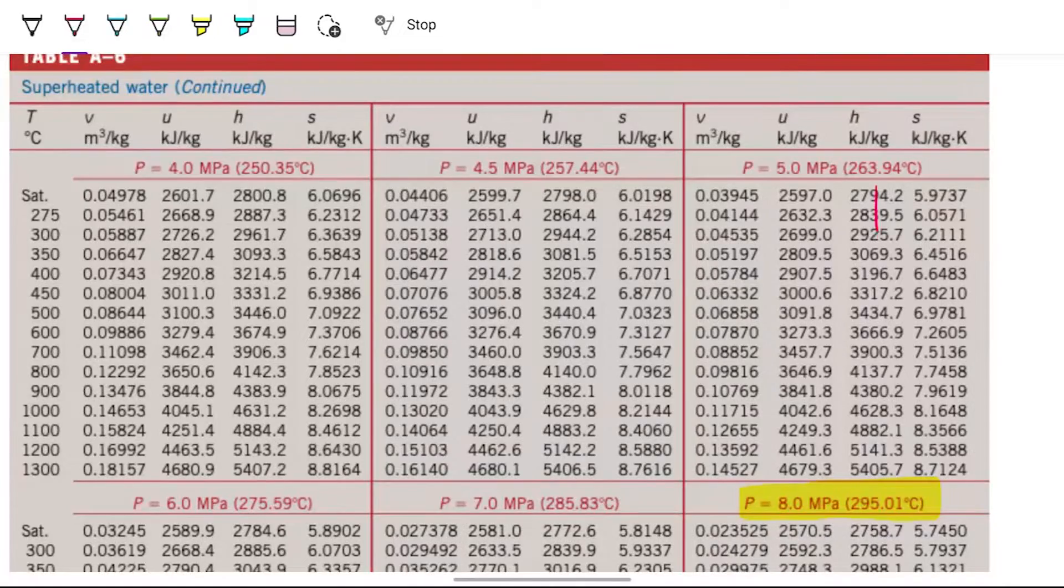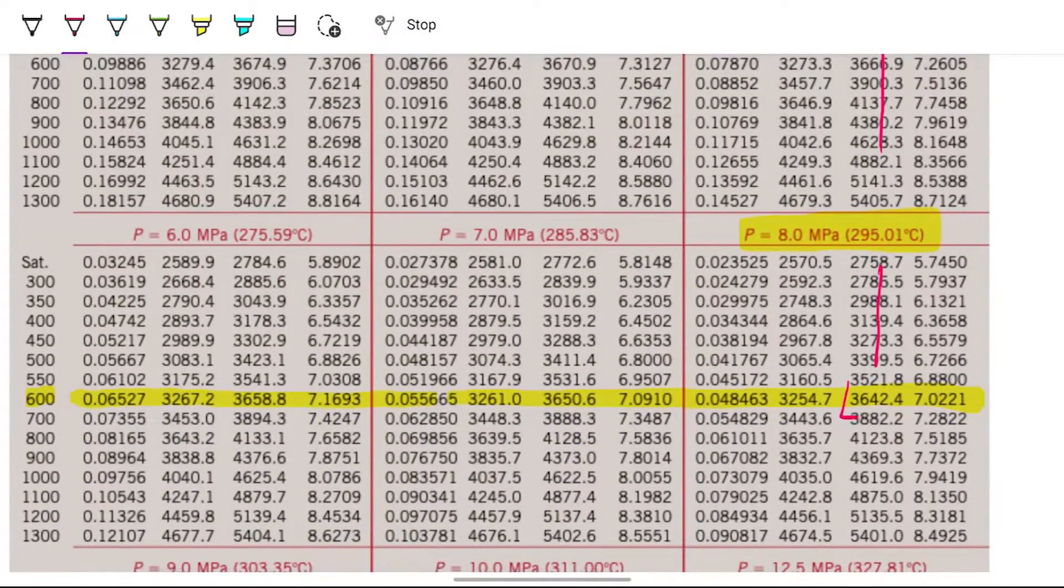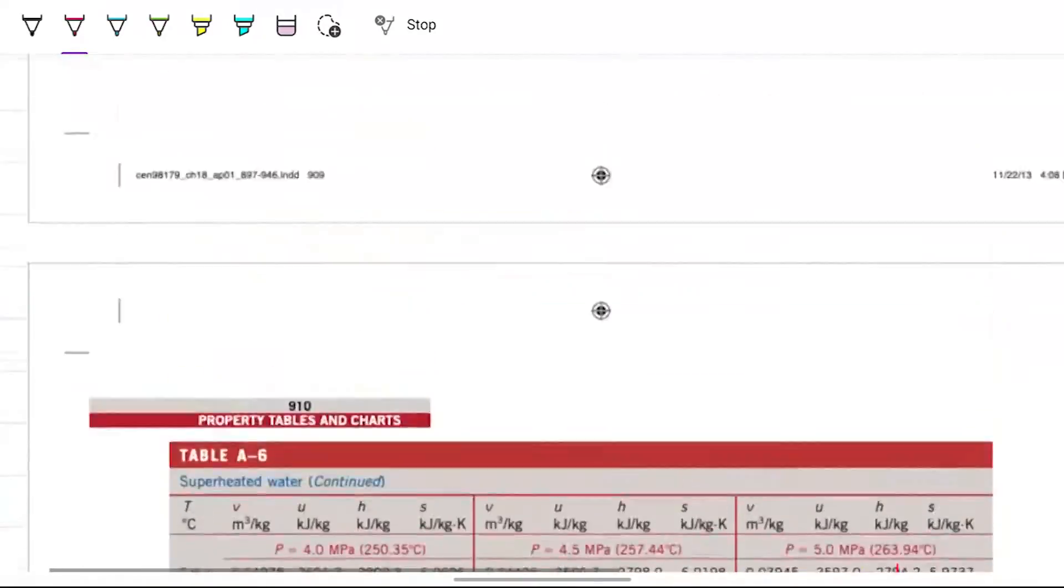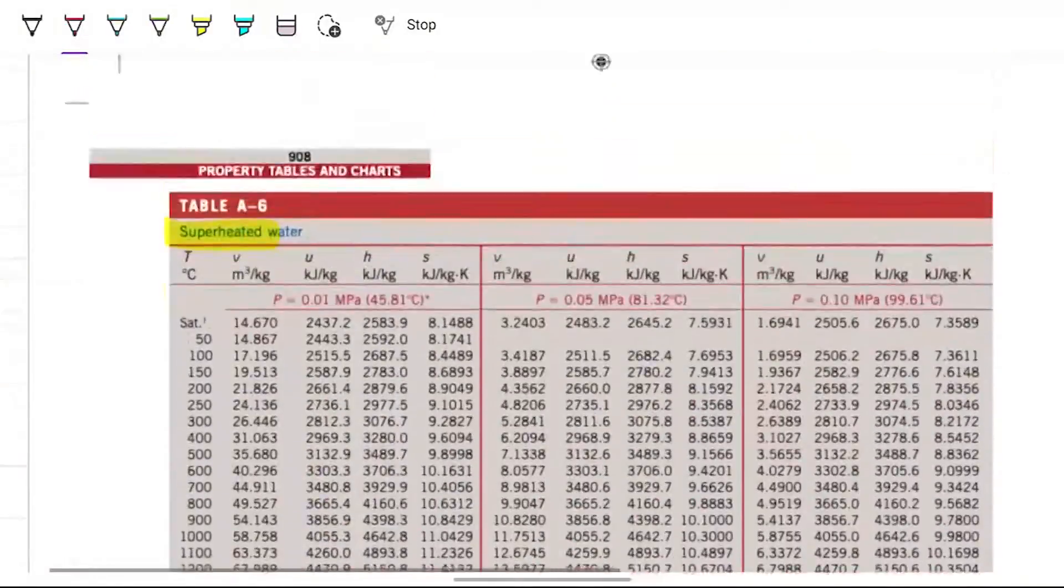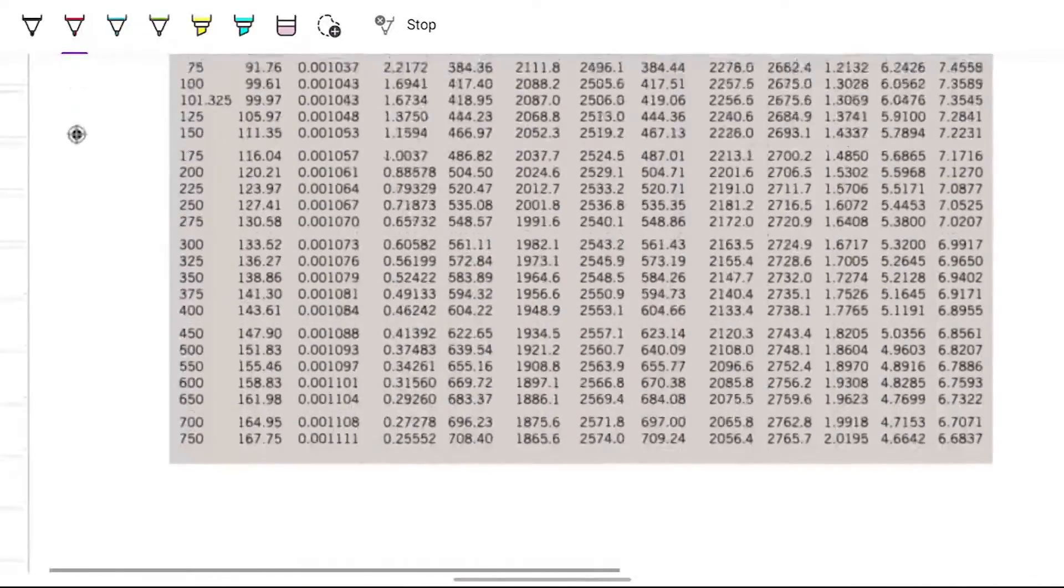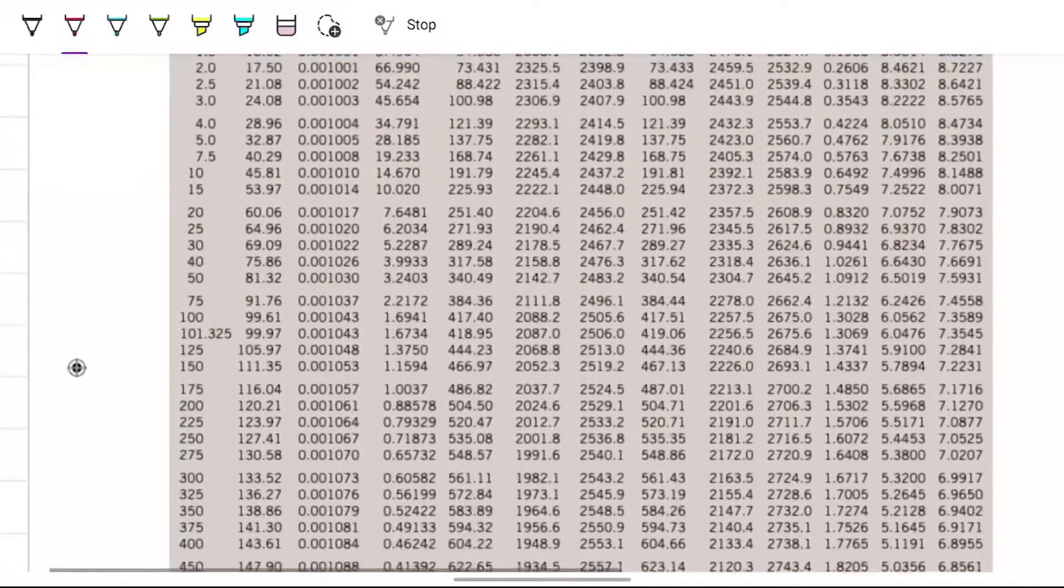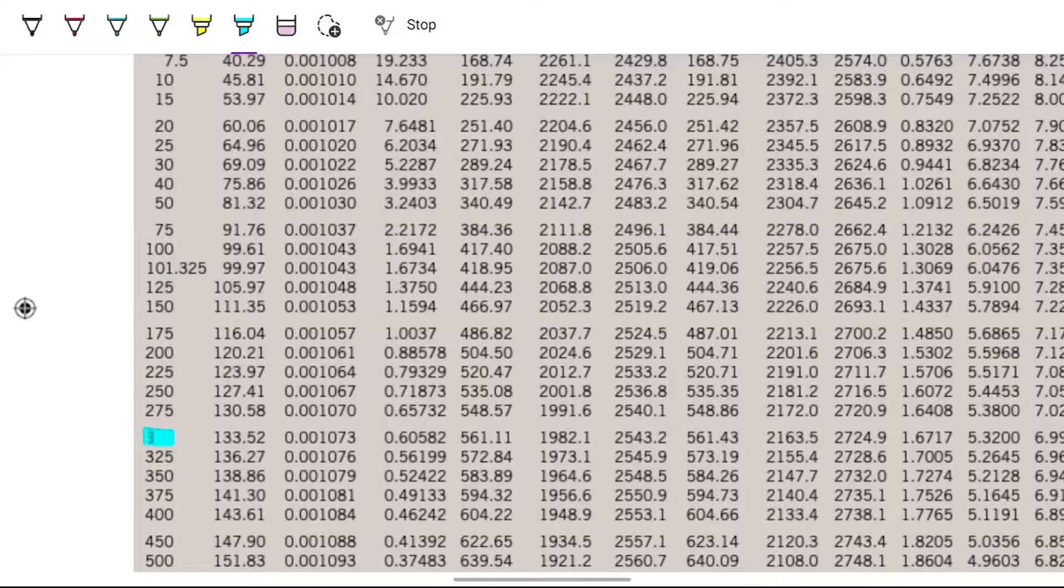Out of this row, I'm looking for enthalpy. Enthalpy is this guy here, so I'm looking for 3642.4. That's my enthalpy h1. What is my enthalpy h2? Enthalpy h2 is going to be 300 kilopascals in saturated vapor. So we can go back up to the saturated table, 300 kilopascals. Here we are, 300 kilopascals. This is the row we're interested in.